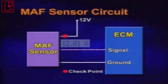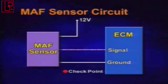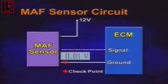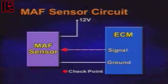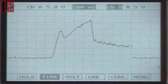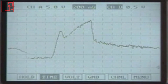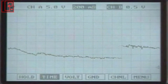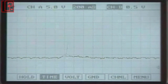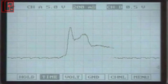There are 12-volt power, ground, and sensor signal terminals at the mass airflow sensor. Check for correct voltage outputs depending on the sensor signal, and also check the waveform through the oscilloscope.